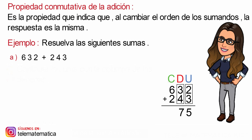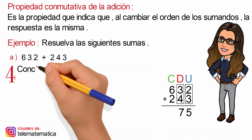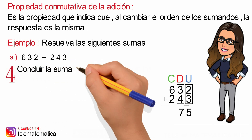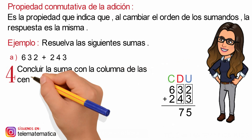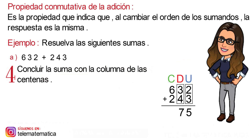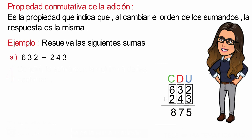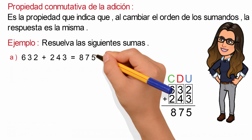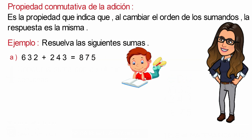Y en cuarto lugar, concluir la suma con la columna de las centenas. Seis más dos son ocho. Y este resultado lo escribimos en la operación de 632 más 243.